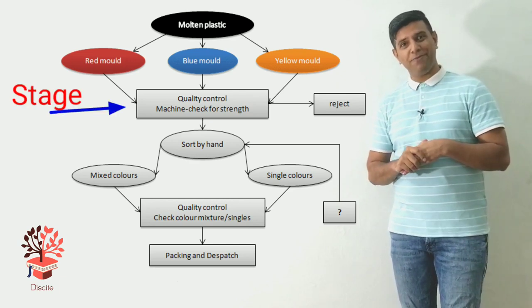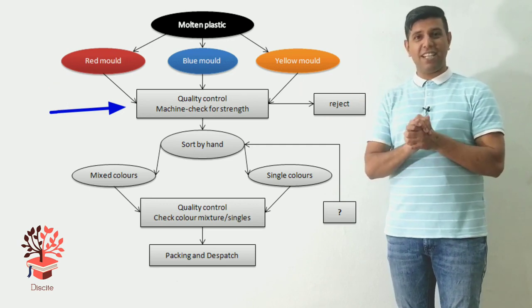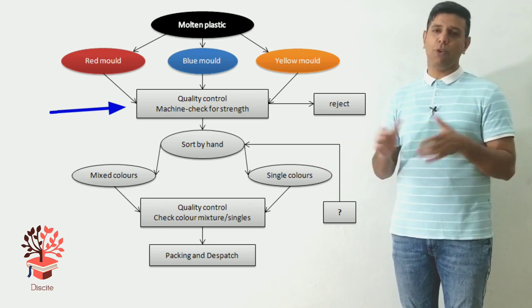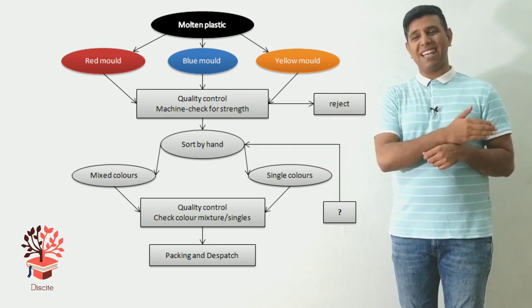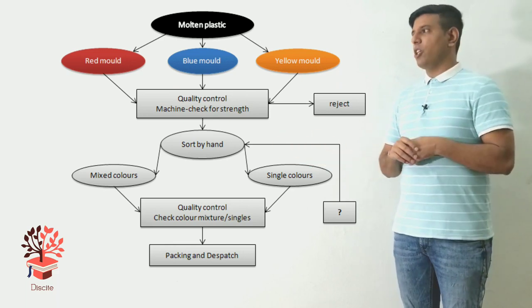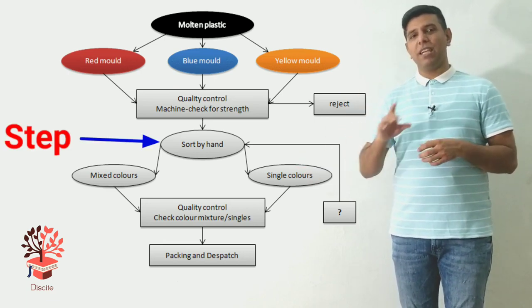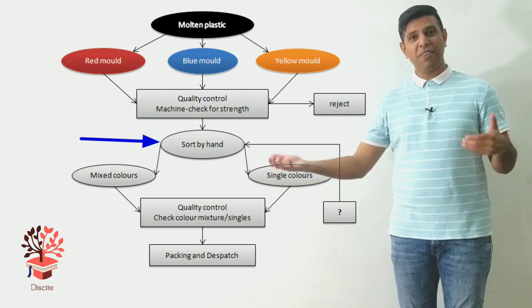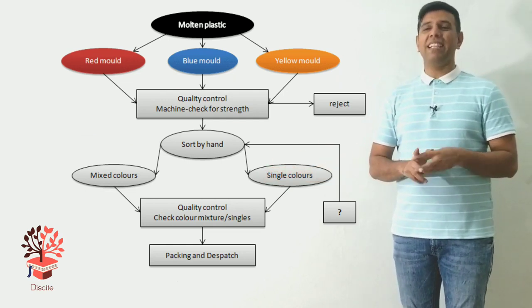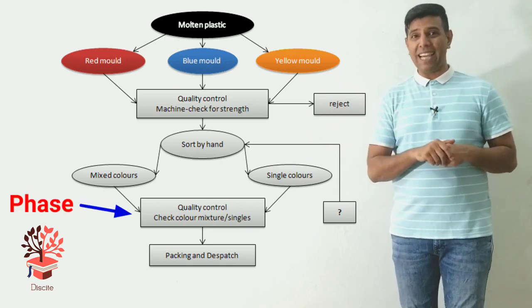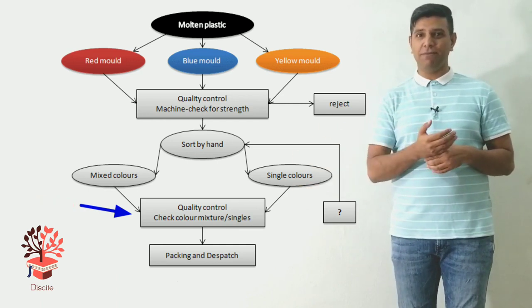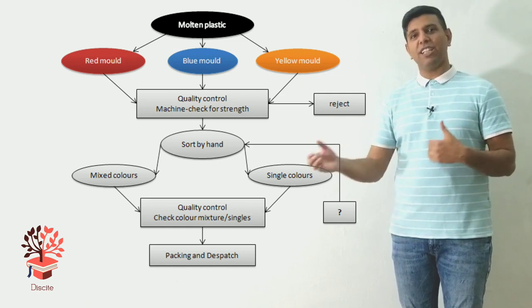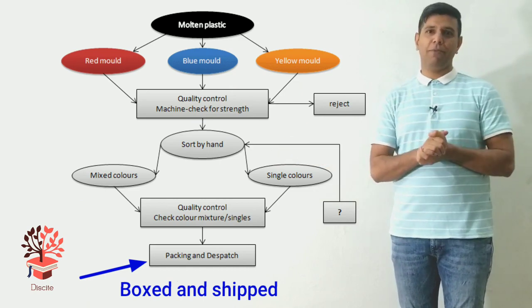And in the second stage - I didn't use the word 'after that' - in the second stage, the paper clips formed go through an automated quality control for their strength. If they live up to the standards, they pass the test. If not, they're rejected. In the following step - I've used the word step for the first time - the paper clips are sorted manually into single colored and mixed colored paper clips. After that, in the second last phase, they go through a quality control again, but this time for their aesthetics instead of internal qualities. If they've been separated properly into single and mixed colors, the product is ready to be boxed and shipped, which is the final phase.